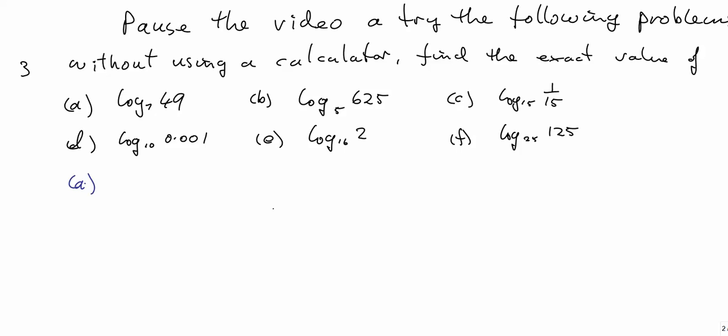Pause the video and try the following. Log to base 7 of 49. What do we have to put in the power of 7 to get 49? 7 to what equals 49? That's 2. Again here, what do we put in the power of 5 to get 625? That is 4. 5 to the power of 4 is 625.